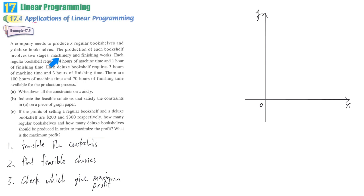In this question, there are two constraints. They are talking about cost: the limited machinery time and also limited finishing time. The regular product needs four hours machine time, one hour finishing time. Deluxe products require three hours of machine time, three hours of finishing time. In total, we have 100 hours machine time available and also 70 hours of finishing time available.